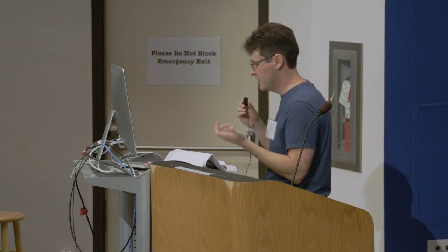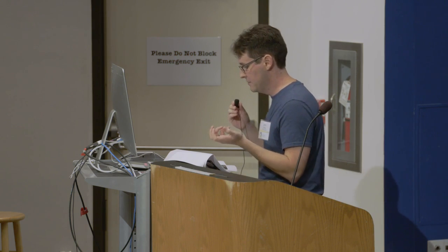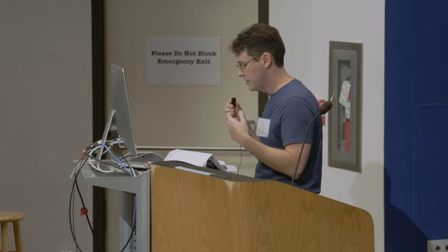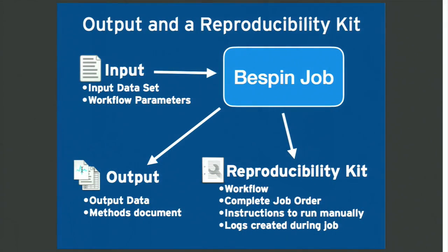To encourage reuse and reproducibility outside of Bespin, we include a reproducibility kit in the results delivered to the researcher. This includes a packed copy of the workflow that was run, the complete job order, instructions to set up the CWL reference runner, and logs from the run.